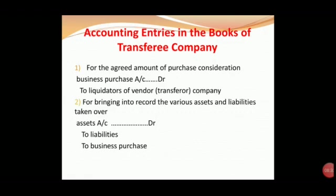Then, for bringing into record the various assets and liabilities taken over: the asset accounts debit — Land Account, Plant Account, Building, Furniture — and then liabilities such as Creditors are credited. The difference is Business Purchase Account.